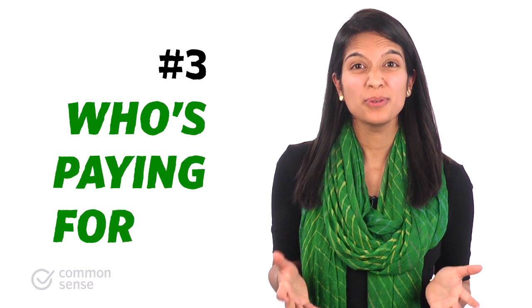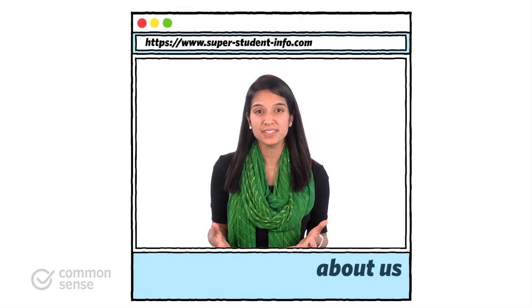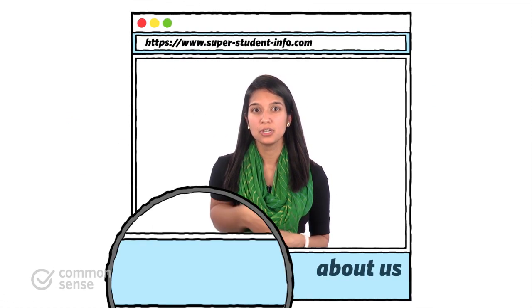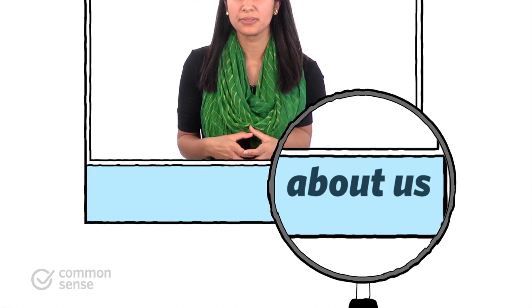Have kids consider the intended audience. Number three: who's paying for it? Help them follow the money and think about the motives behind the message. What else does the funder do? Show kids how to dig for this info.